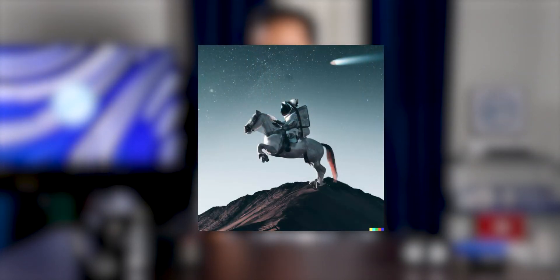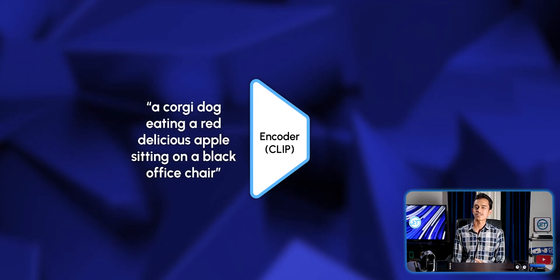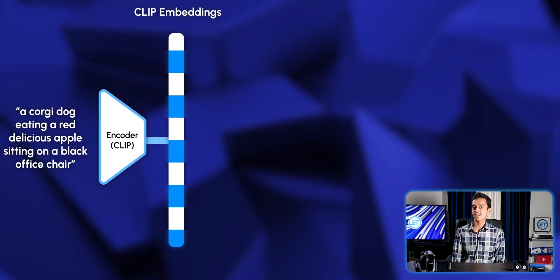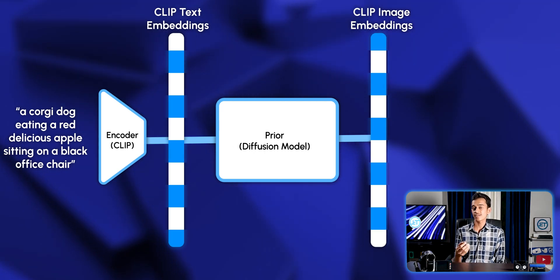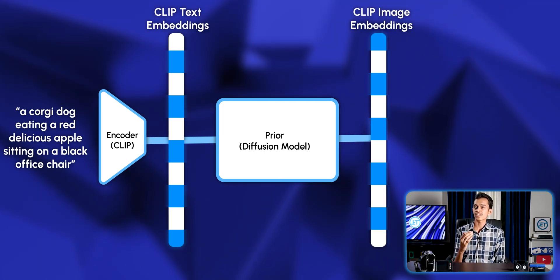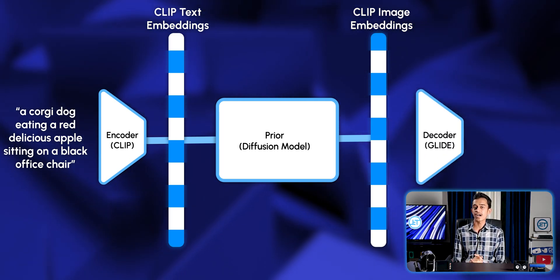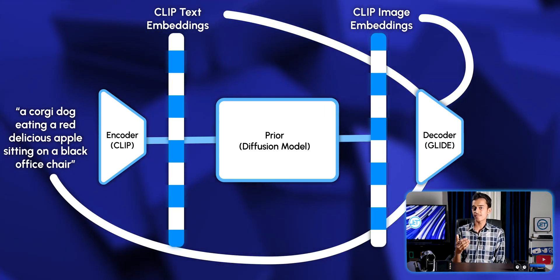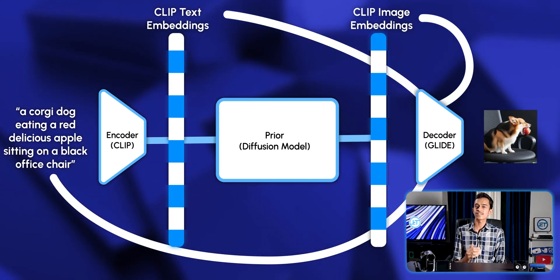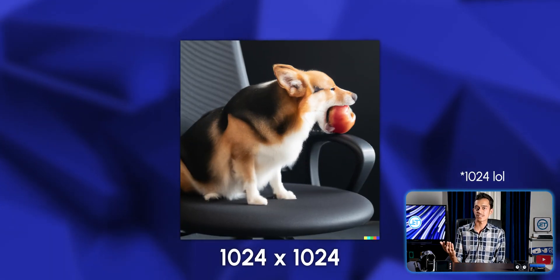The generated images are originally 64×64 in resolution and are upscaled twice to reach 1024 resolution. To summarize: the text and image embeddings are created by the CLIP model; the final image embeddings are created by the diffusion prior so the model knows how to create images from scratch based on the user prompt; and in the decoding part, a modified version of Glide uses the user prompt and CLIP embeddings to decode and create the final images, which are upscaled twice to reach 1024 resolution.